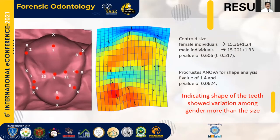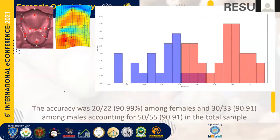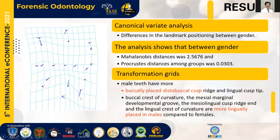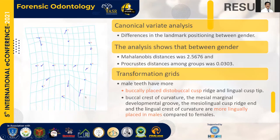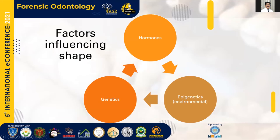Discriminant function analysis was correctly able to delineate male and female casts based on premolar shape in 50 out of 55 cases. Canonical variate analysis — where each blue dot and line represents variation in the landmarks — showed that male teeth have a more buccally placed distobuccal cusp and more lingually placed buccal crest of curvature, as well as the mesiolingual cusp bridge end. The concept that centroid size did not vary is supported by Banerji et al. and Young et al. in Australian and Indian populations.